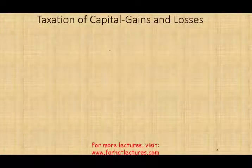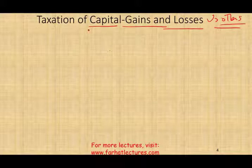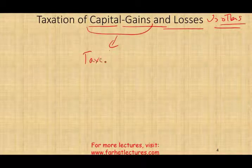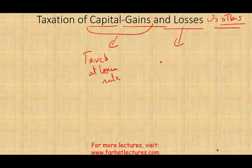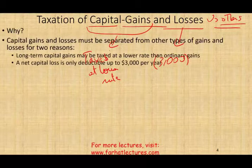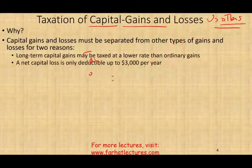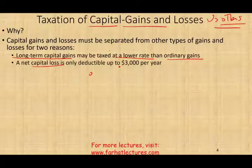Today we're going to be discussing taxation of capital gains and losses. Why do we need to differentiate between capital gains and losses versus other gains and losses? Capital gains can be taxed at a lower rate. If losses are capital losses, they could be deductible up to $3,000. Long-term capital gains are taxed at a lower rate than ordinary gains, and the net capital loss is deductible up to $3,000.